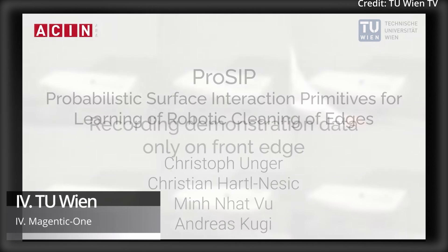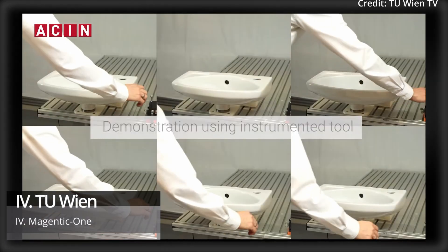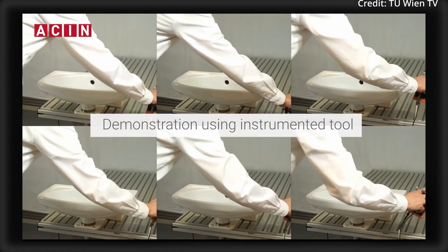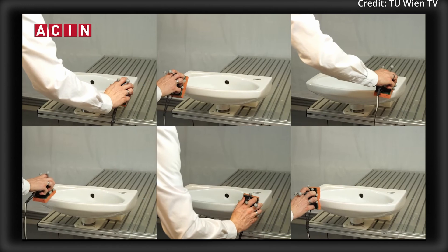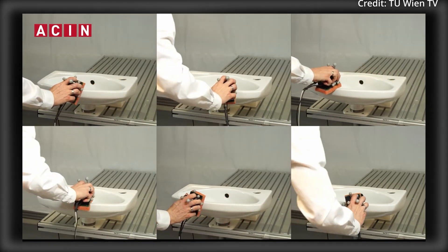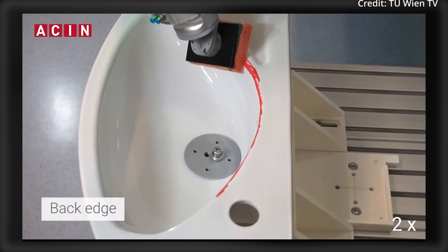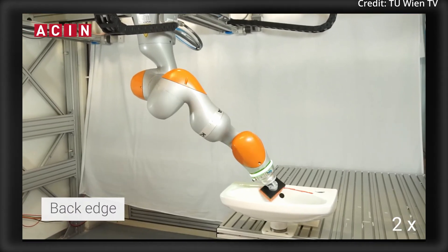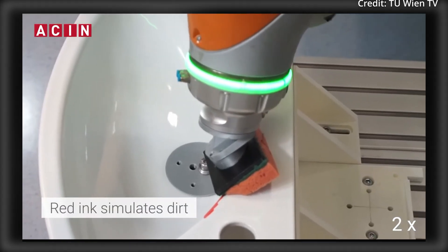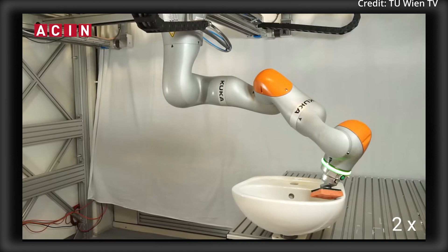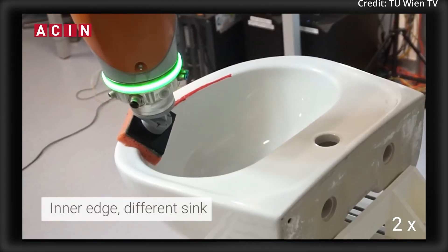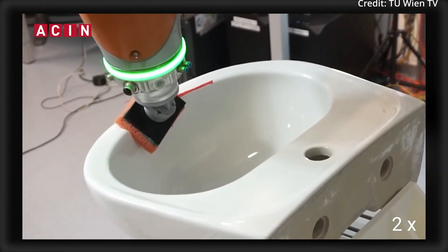And in another groundbreaking leap for robotics, researchers at TU Wien have developed a washbasin cleaning robot that mimics natural human movements by adapting flexibly to various shapes and surfaces. This is because traditionally, programming robots for tasks like cleaning uneven surfaces had involved laborious coding of every motion. But TU Wien's team took a different path, and with shocking results.